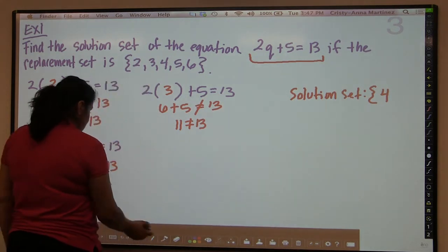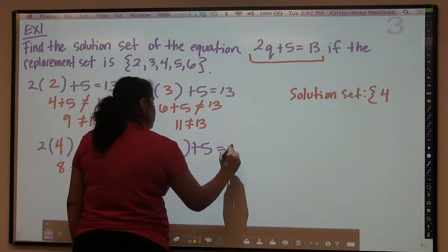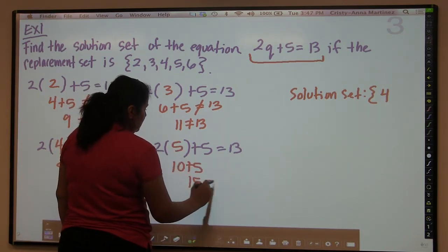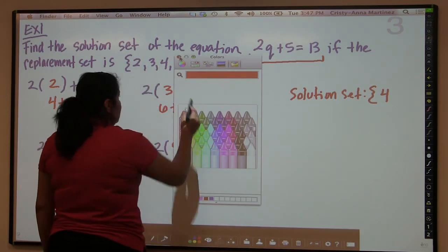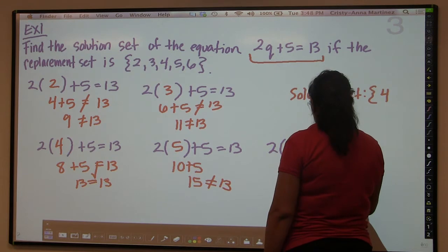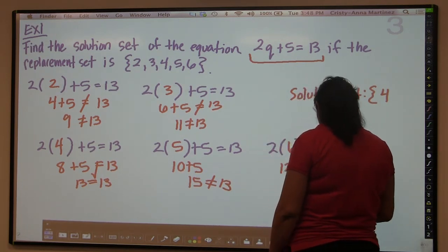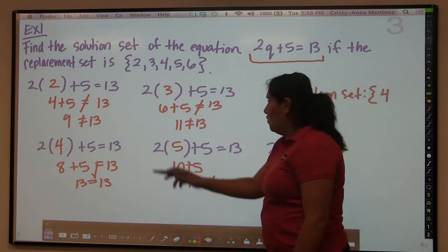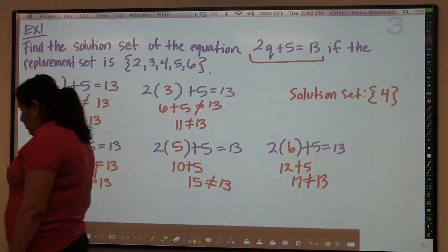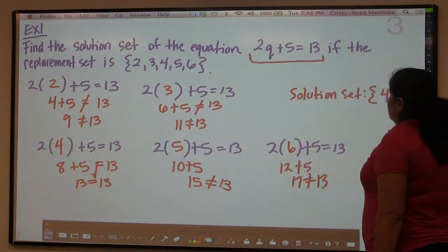We still have a couple more numbers to try. Trying 5: 2 times 5 is 10, and 10 plus 5 is 15, which is not 13. Then the last number is 6: 2 times 6 is 12, and 12 plus 5 is 17, which is not 13. So none of these numbers work except for 4. Our solution set has only one element, and our solution set is {4}. That is how you do these replacement set problems.